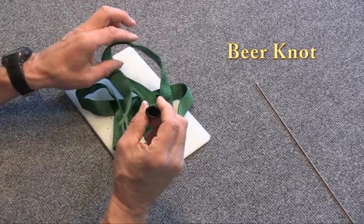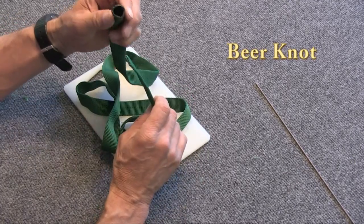The new school way of making slings out of tubular webbing is to use a beer knot.